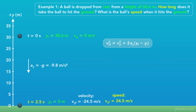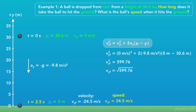Now let's verify using the other equation. We plug in 0 meters per second for initial velocity, negative 9.8 meters per second squared for acceleration, 0 meters for final position, and 30.6 meters for initial position. Simplifying and taking the square root gives us 24.5 meters per second for the final speed. Notice this equation always gives a positive value for v because v is squared, so it gives us speed — the absolute value of velocity.